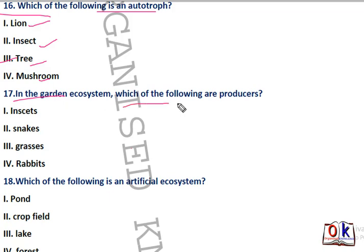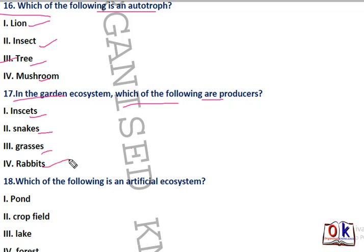Question number 17: in a garden ecosystem, which of the following are producers? Options are insects, snakes, grasses, or rabbit. Grasses will be the right answer — they are the producers in a garden ecosystem.